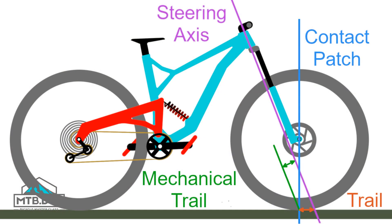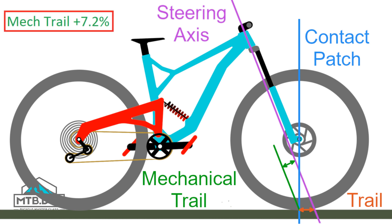The problem with using trail to compare bike, fork, and wheel combinations is that it fails to accurately represent the amount of leverage the contact patch has over the steering. Thus, we will use mechanical trail. Mechanical trail is the shortest distance between the contact patch and the steering axis. As offset is shortened, both trail and mechanical trail are increased; however, mechanical trail is the actual value used for calculating leverage between the contact patch and steering axis. Returning to the example, mechanical trail is boosted by 7.2% when moving to the shorter offset.